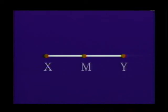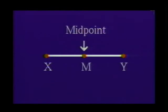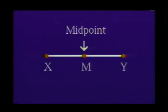Every line segment contains a point halfway between its endpoints. This point is called the midpoint. In our drawing, point M is the midpoint of line segment XY when line segment XM is congruent to line segment MY.